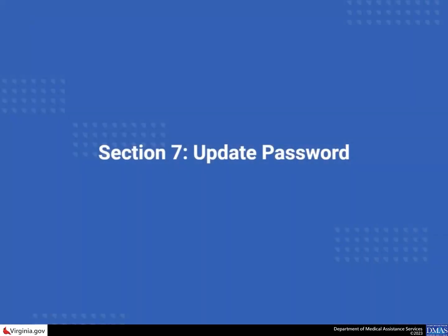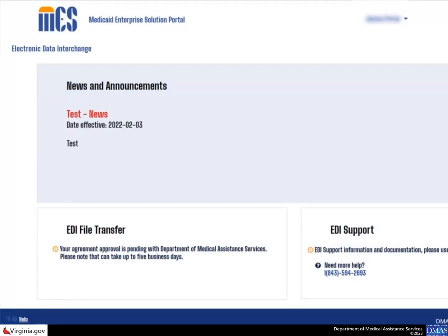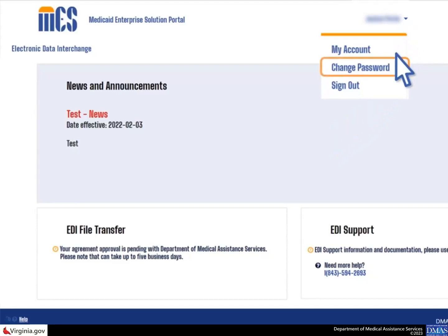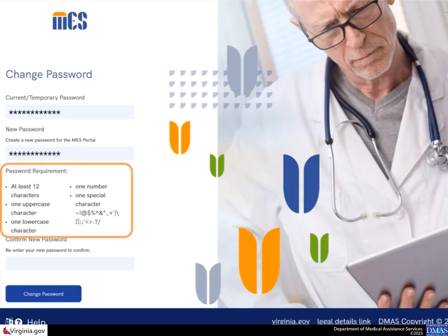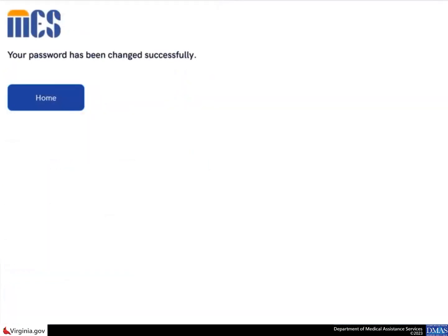The final type of update you can make in the EDI portal is to change your MES password. From the EDI portal, select the drop down arrow next to your email address and choose the change password option. When the change password page displays, enter your current password. Next, enter your new password ensuring it meets the guidelines listed on the page. Then re-enter the new password and confirm it matches before selecting the change password button. When the system displays a confirmation that the password has been successfully changed, select the home button to return to the MES portal landing page.